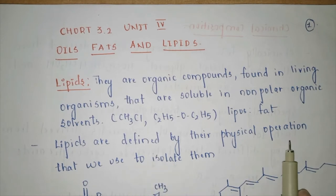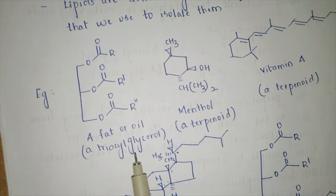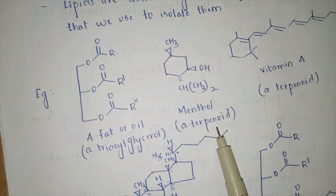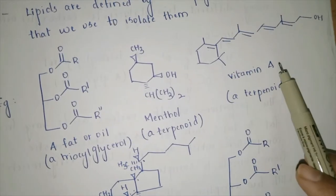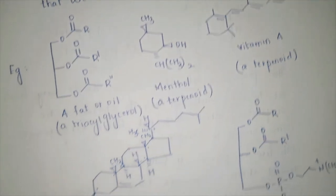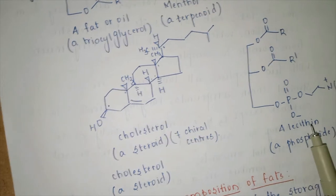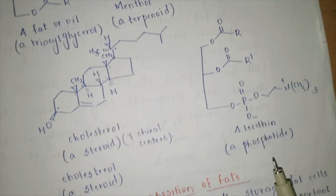Lipids are generally defined by the physical operation used to isolate them. If the lipid is coming from a fat, it is called a triacylglycerol system. If isolated from a menthol-like system it is a terpenoid system, and vitamin A is also a terpenoid system. Cholesterol-like systems are steroids, and lecithin is a phosphatide system.